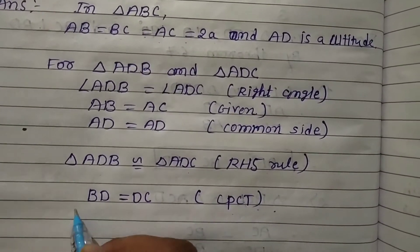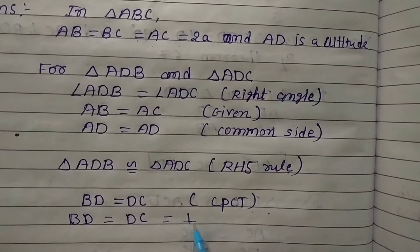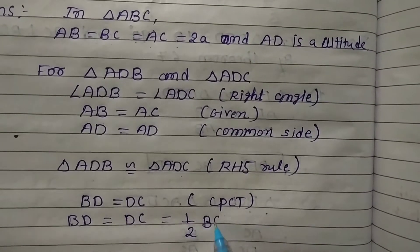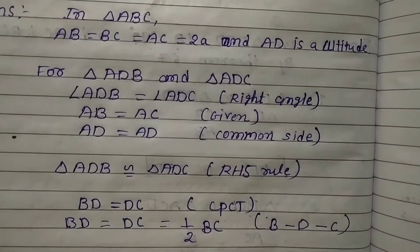We can write BD = DC = BC/2 because B, D, and C are collinear points.